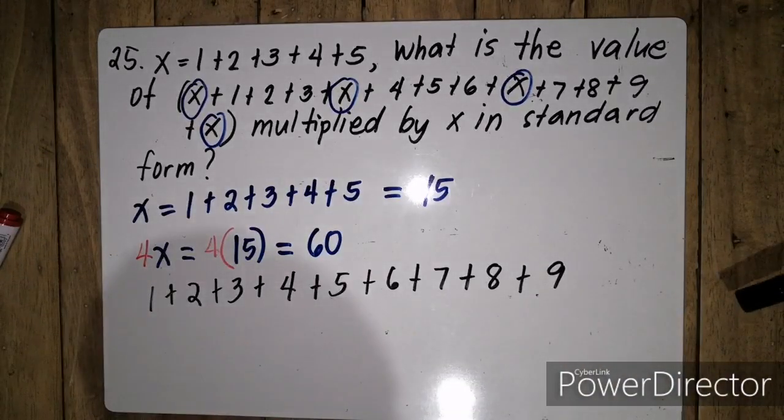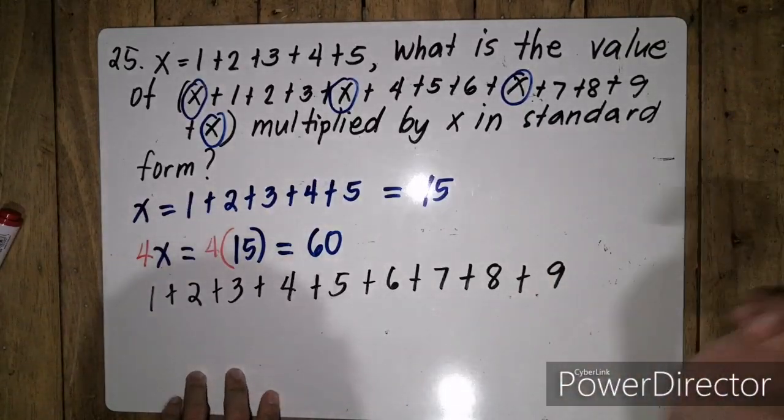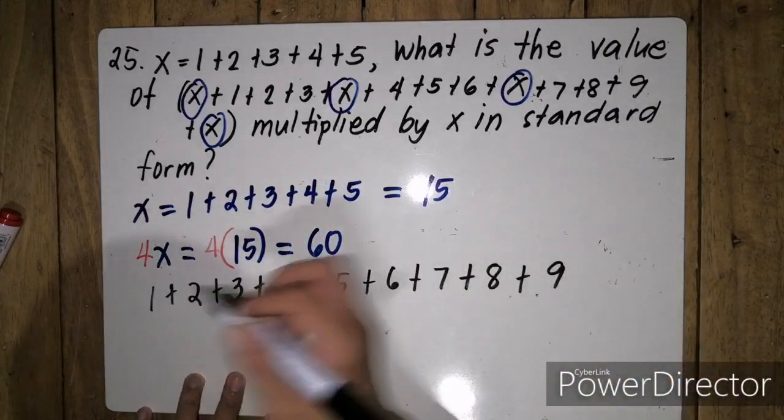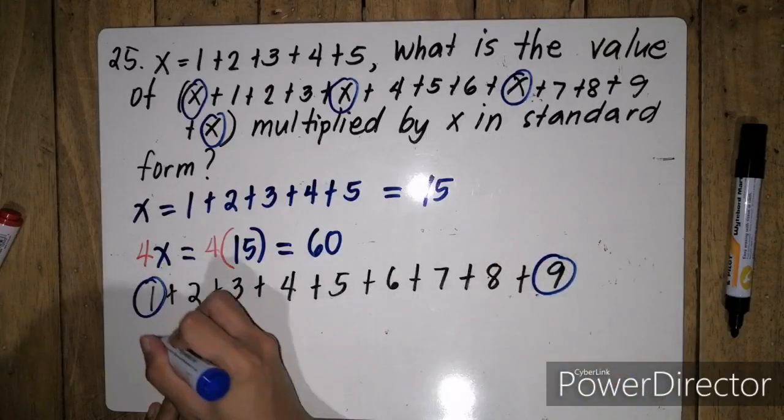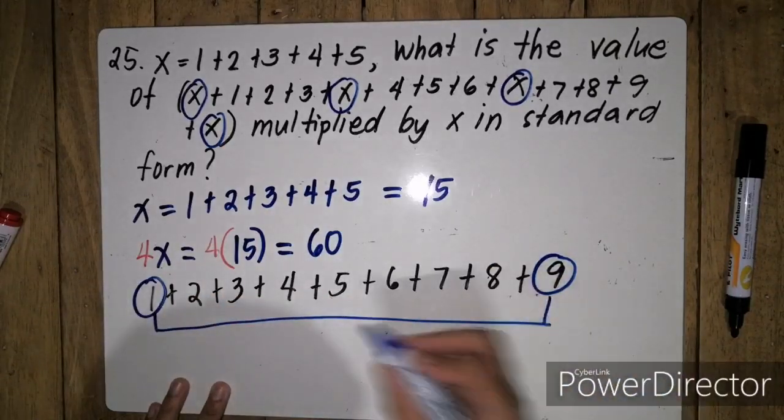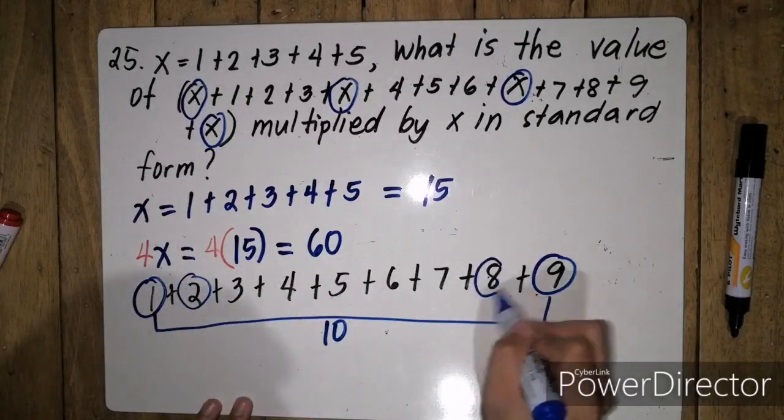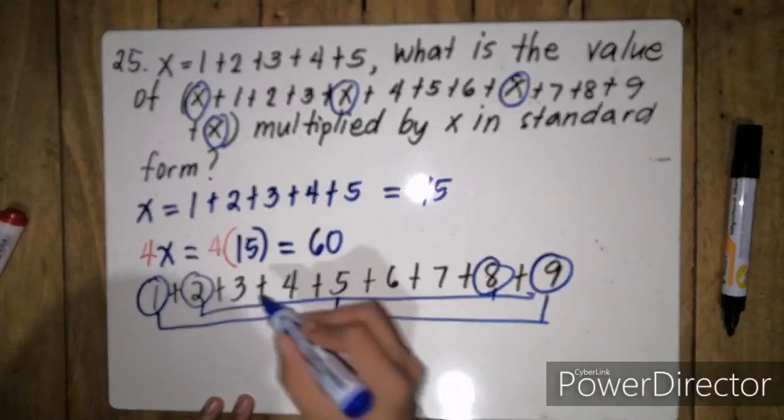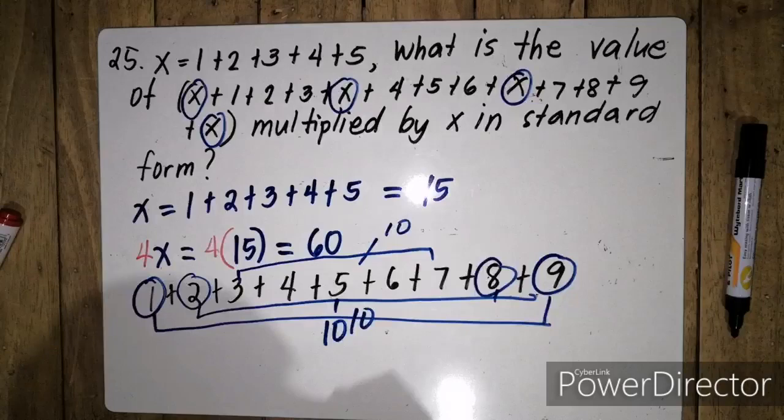So para madali natin ma-add ito, ang gagawin natin, titignan nyo yung partners, partnerings. So kapag in-add natin to, we'll have a sum of 10. Pag in-add natin to, 2 plus 8, we also have a sum of 10. The same with this one.